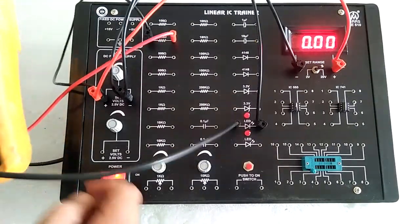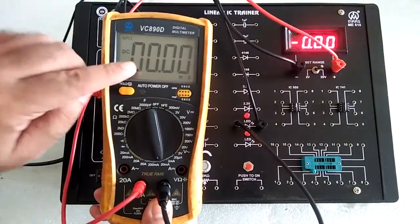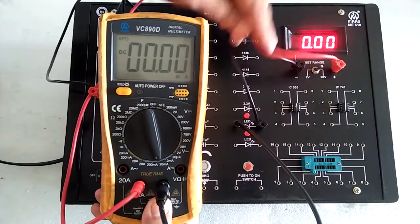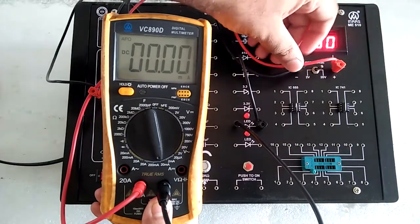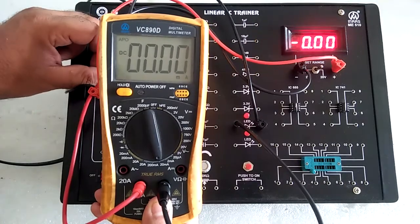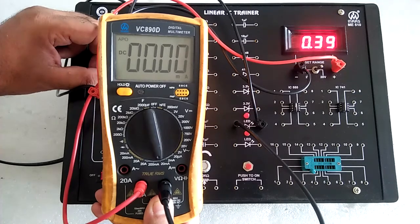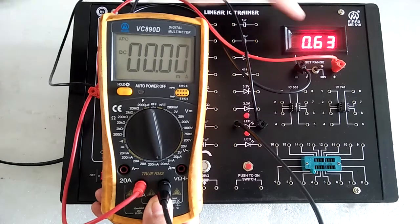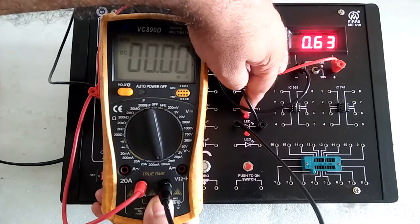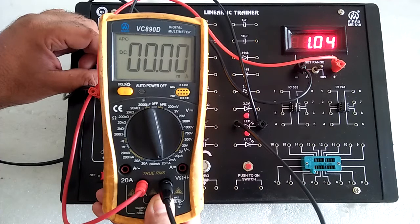Now this meter will give you the voltage and this meter will show the current. Take readings from both voltmeter and current meter. Slowly and gradually increase the supply. Around 1.5 volts, the LED will start glowing and current will be present in the multimeter.